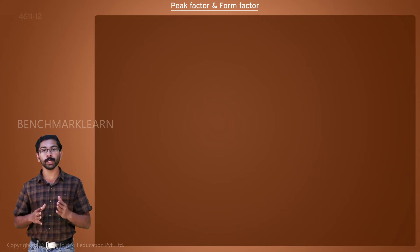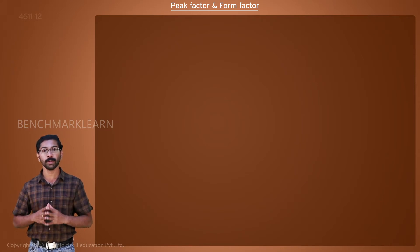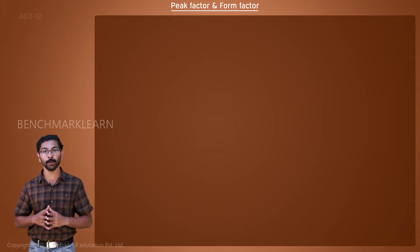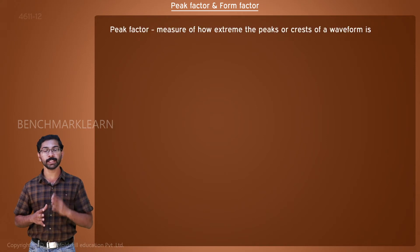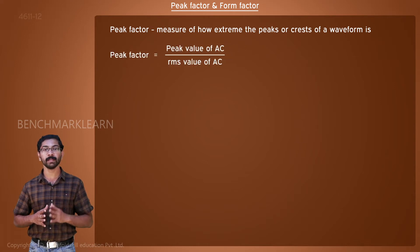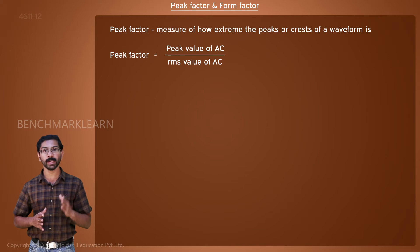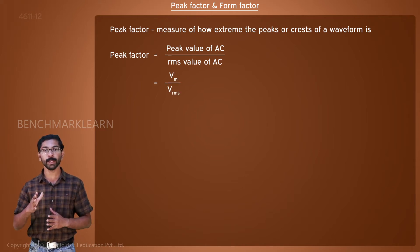We can define a new term called peak factor or crest factor to show the ratio of the peak value to the effective value or RMS value. Peak factor is equal to the peak value of the AC waveform divided by the RMS value of the AC waveform, which is equal to Vm divided by V_RMS.